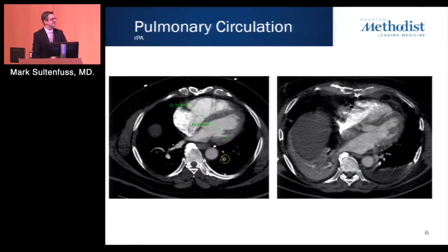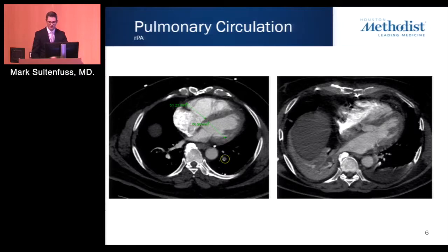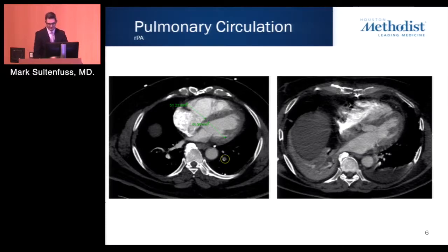Examples of abnormal left ventricular to right ventricular ratios can be prognostic for patients. Those with elevated RV-LV ratios have significantly elevated all-cause and PE-cause mortality. The image on the right shows paradoxical bowing of the interventricular septum in the setting of acute PE, where the highlighted area in yellow shows an acute pulmonary embolus.